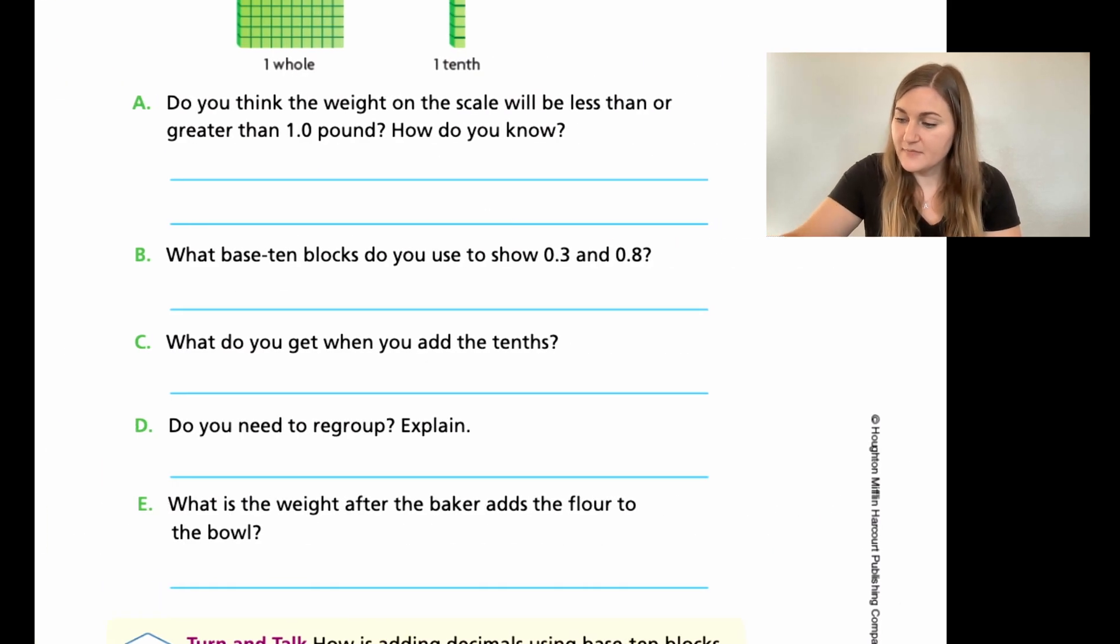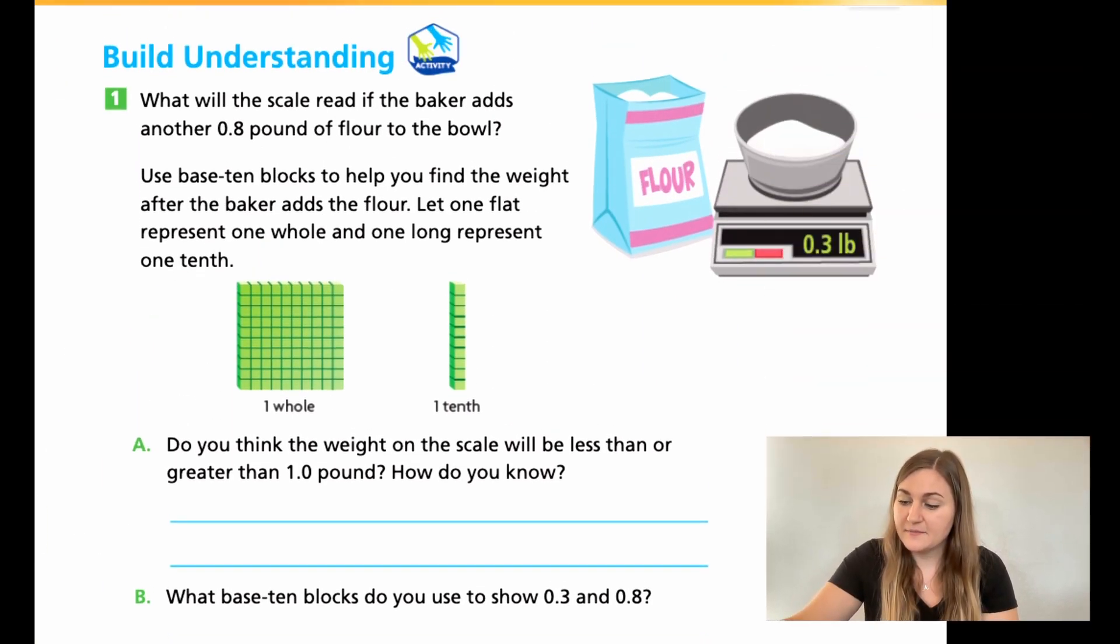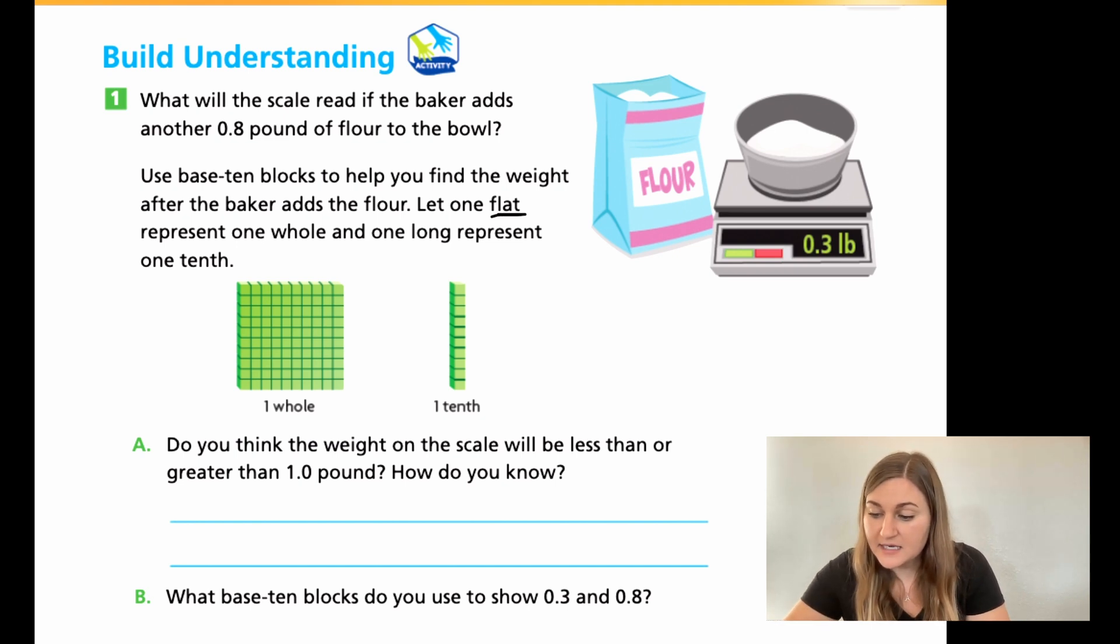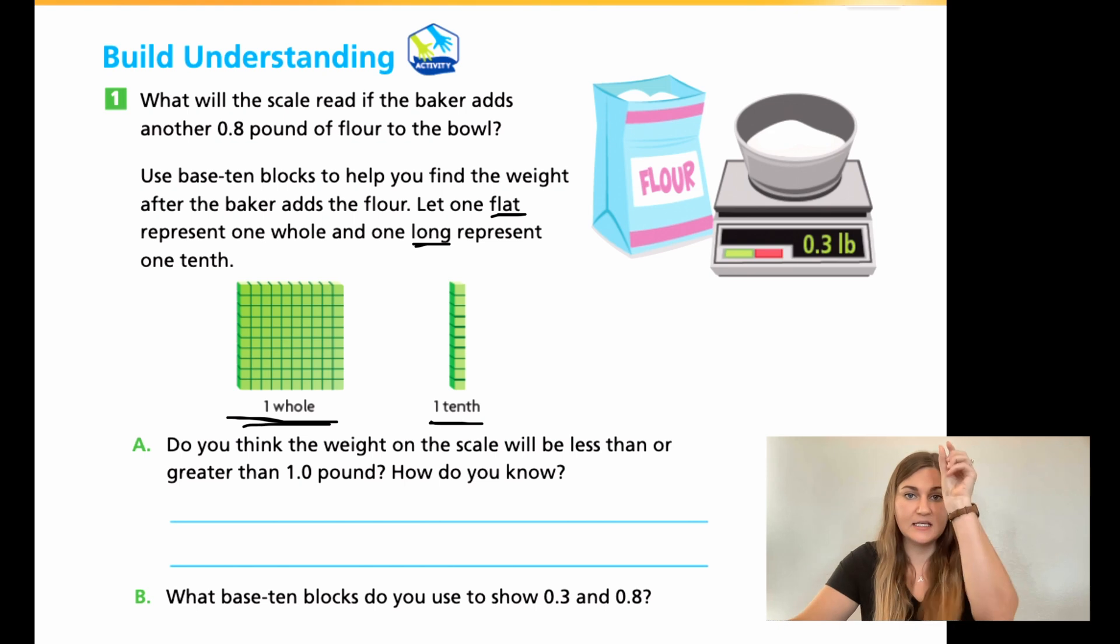All right. Let's go ahead and flip the page here. Thankfully, no more drawing, but we do have representation of our blocks that will help us through this. So we're on page 340 and we have a build your understanding number one that says, what will the scale read if the baker adds another 0.8 pound of flour to the bowl that's already there? And it says 0.3. It says use base 10 blocks to help you find the weight after the baker adds the flour. Let one flat, and remember flat is this guy here, it's that big square represent one whole and then one long, that vocab long is just the skinny bar here.